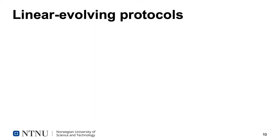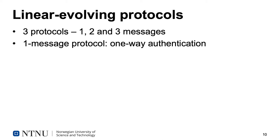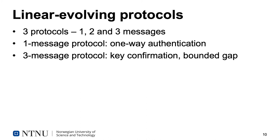Note that the protocol has fixed roles. If Bob could also initiate a session, then we could never be sure that the initiator would be behind its partner, and thus we could never be sure that a session could be completed successfully. Our linearly evolving protocols come in three variations: the two-message protocol we have already seen, a one-message protocol, and a three-message protocol. The one-message protocol is simpler and most efficient, giving only one-sided explicit authentication. The three-message protocol gives mutual authentication and also has a provably bounded gap, meaning that regardless of adversarial influence, the parties will never be more out of sync than the number of concurrent sessions. This protocol also allows role reversal, making it more flexible than our one- and two-message protocols.